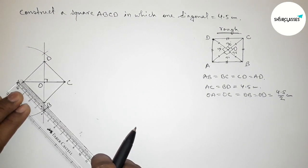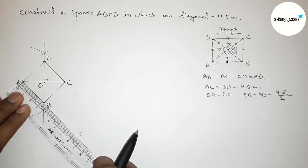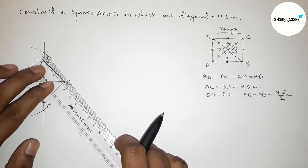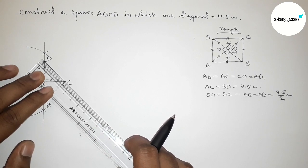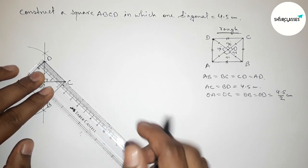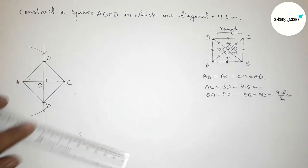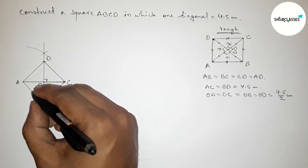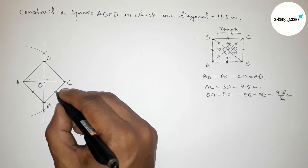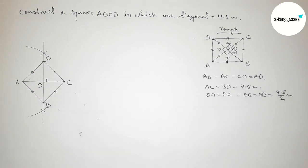Now checking the length. This is obviously okay. Now checking this length first. So this is 1, 2, 3, and this is 3.2 centimeter approximately. So all the sides are equal.